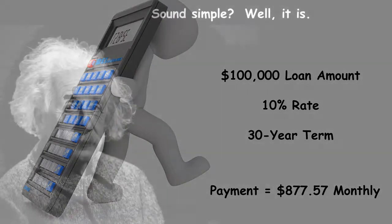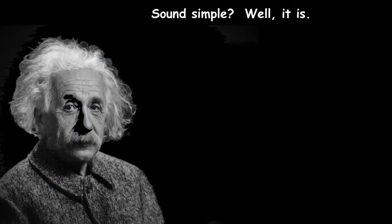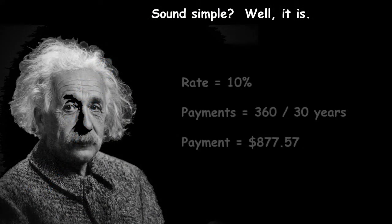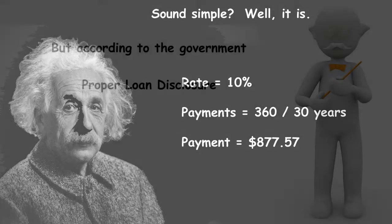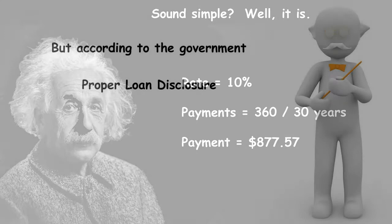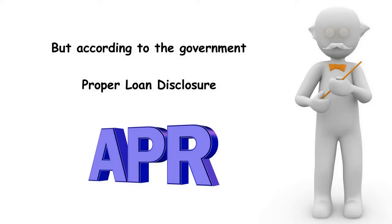Sounds simple? Well it is. You know what the rate is, how many payments you'll have to make, how much your payments are, and what the costs are. But according to the government, we now have to do a proper loan disclosure and disclose the annual percentage rate, among other things.